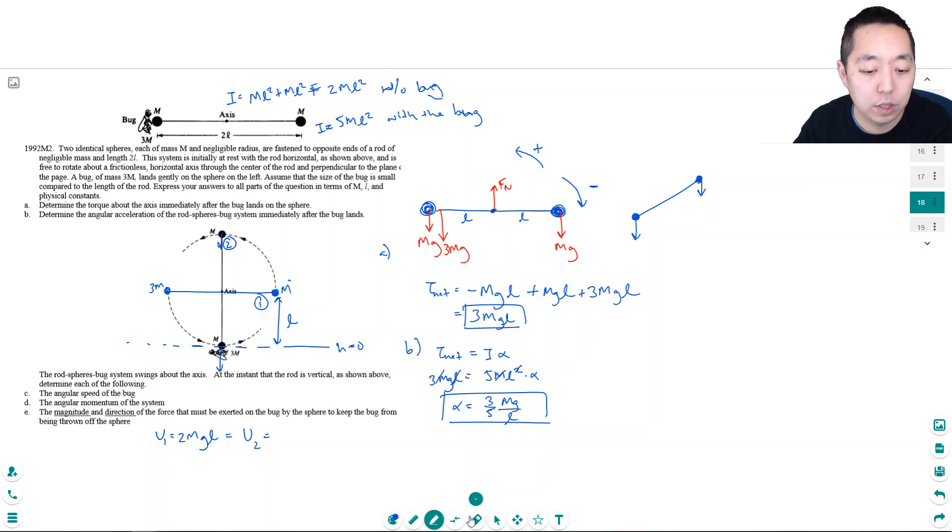So that would be 5mg·l, and that equals the energy when it's now vertical. When it's vertical, this has no gravitational potential energy because it's at the minimum height zero. This is at a height 2l, so this is 2mg·l. The potential energy is different—where that energy went was into the rotational energy of this system.